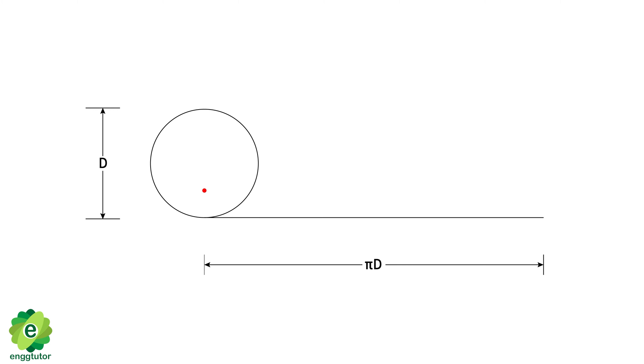When the circle rolls on this straight line, the generated path is called an inferior trochoid. Let's see how the path will generate.